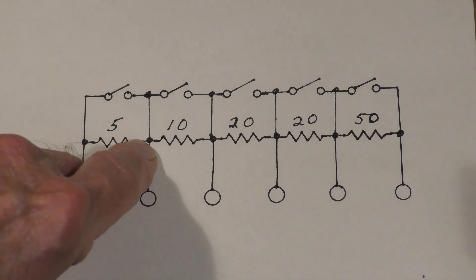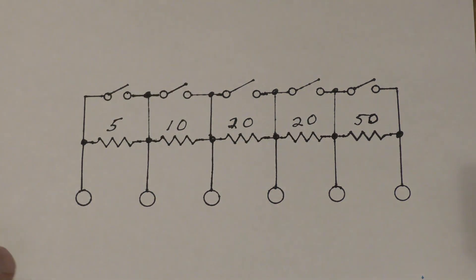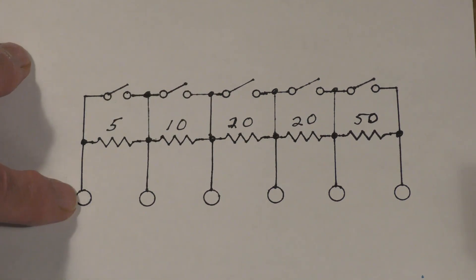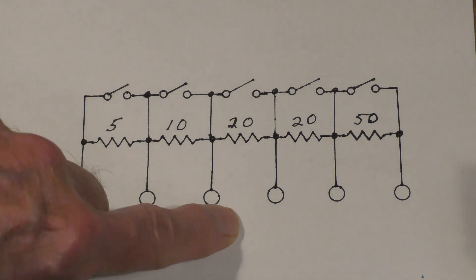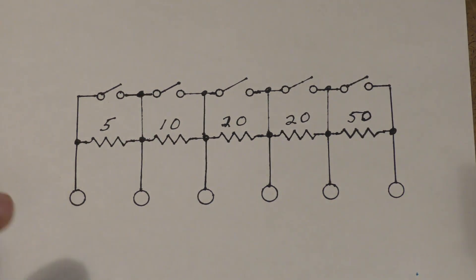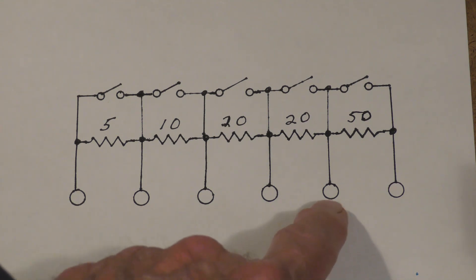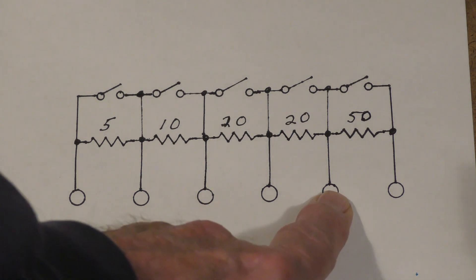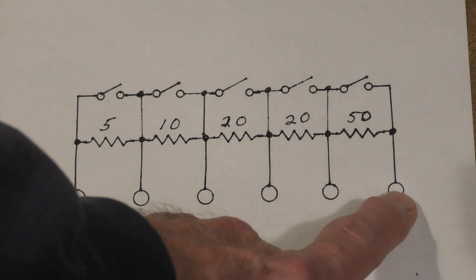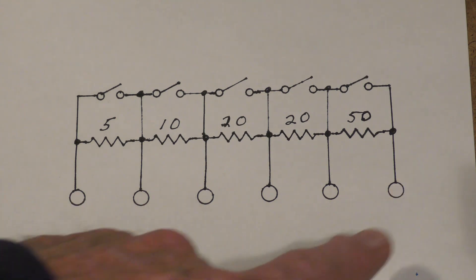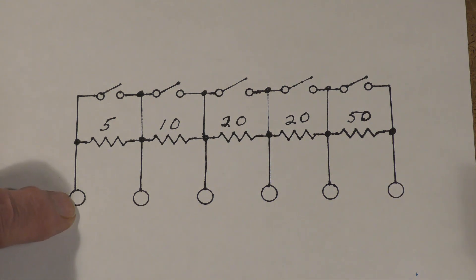Each point is brought out to a binding post so that if you want to, you can put jumpers across various parts of this. I think you'll see that gives you a little more flexibility. But the most important thing about this is that, for example, if you put a lead on this binding post and another in this, you can adjust the resistance between this point and that point.